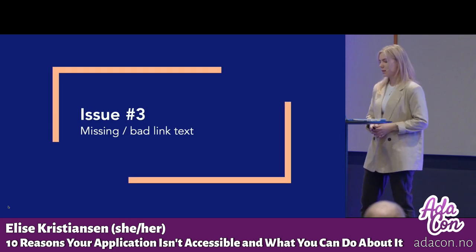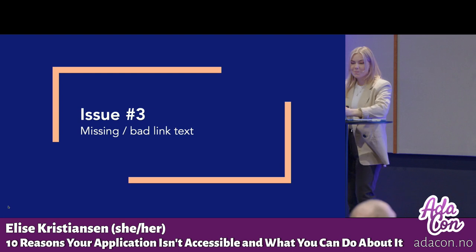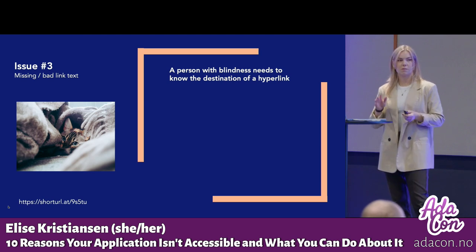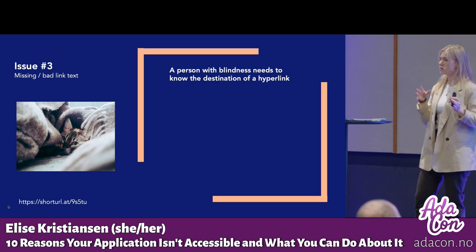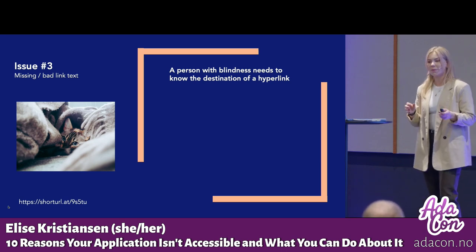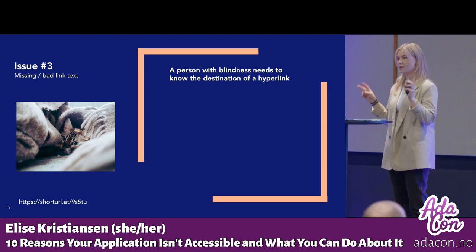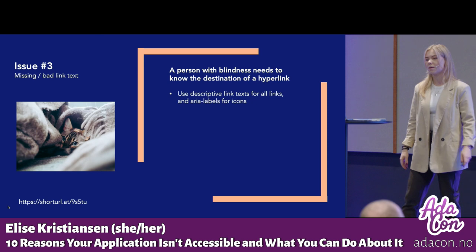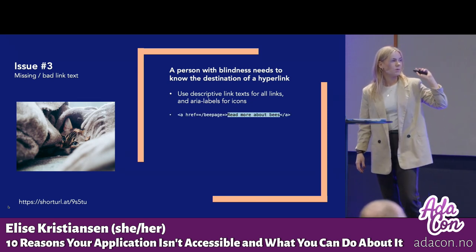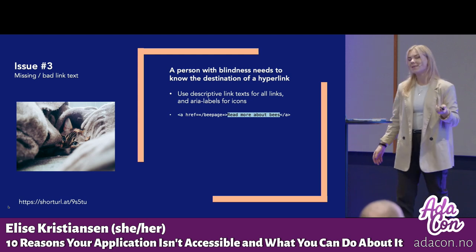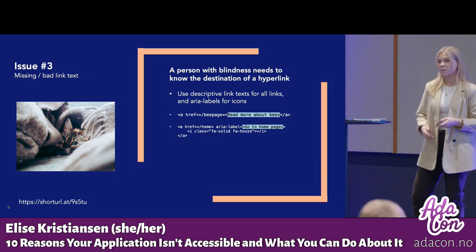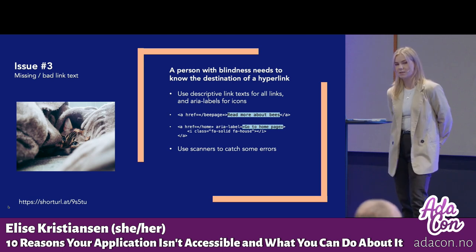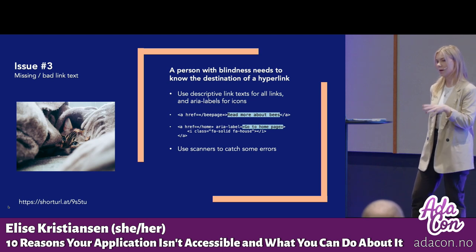Issue number three: missing and bad link text. A common mistake is missing or simply bad link text. Websites are mostly full of links, but developers tend to put small icons or insufficient text like just 'read more' as link text. How is a visually impaired person supposed to know what 'more' means without any context? Use descriptive link text — for example, 'read more about bees' for an article about bees — and use ARIA labels for icons, for example 'go to homepage' wrapped around a house icon. A scanner will catch many missing links but probably won't distinguish between good and bad link text.